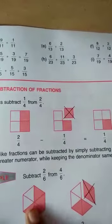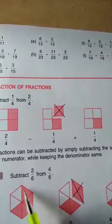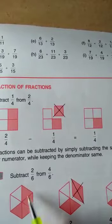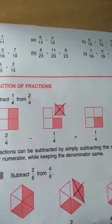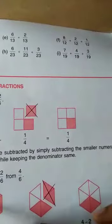In picture wise also we can find subtraction and addition. Here it is 1, 2, 3, 4, 5, 6 equal parts there. Out of the 6, 4 is colored. Therefore its fraction is 4 by 6. We have to subtract 2 by 6 from this.